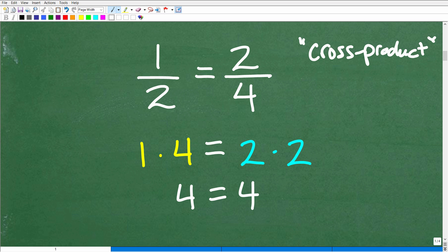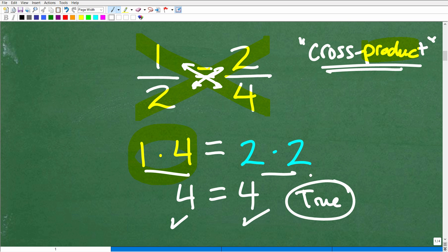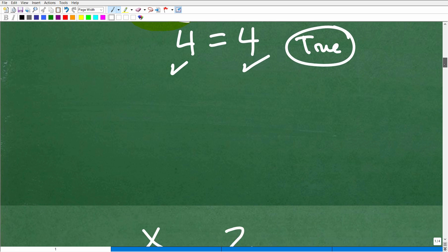There are other properties of proportions, but if you remember the cross product, you'll be able to do 99.9% of proportion problems. So the cross product is basically exactly what it says. You're going to find the product diagonally, crosswise. So 1 times 4 is going to be equal to 2 times 2. When you have a proportion, the cross products are equal. If you remember this, you'll be able to solve almost all proportion problems. When we have two equal fractions, the cross product is true. In this simple example, 1 times 4 is equal to 2 times 2.